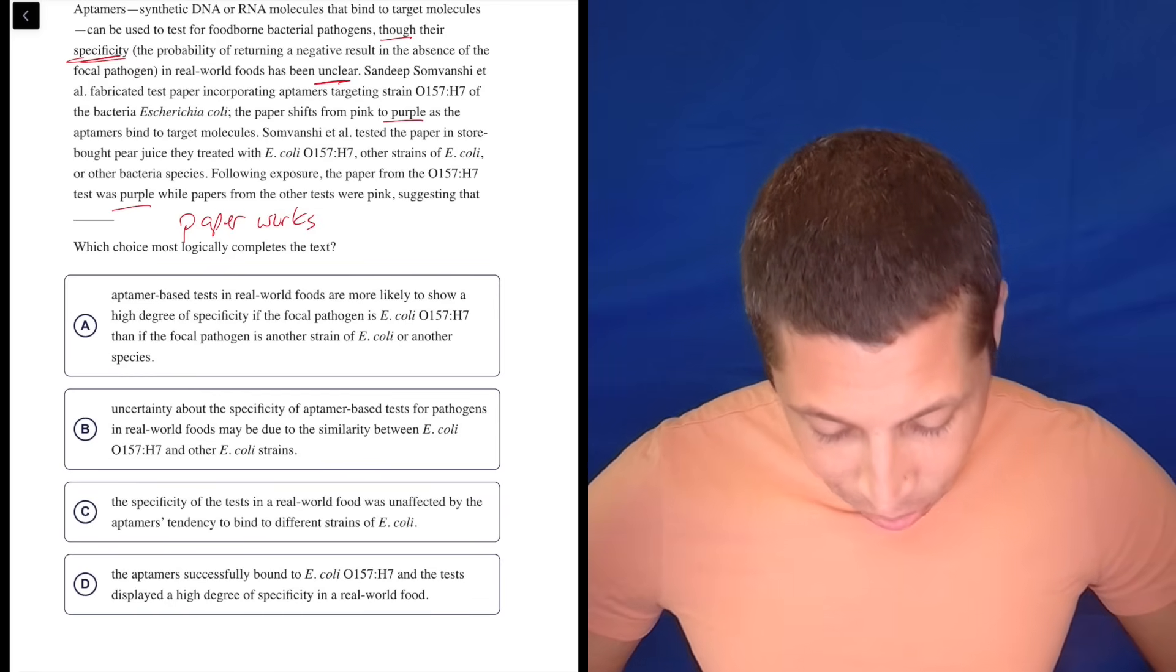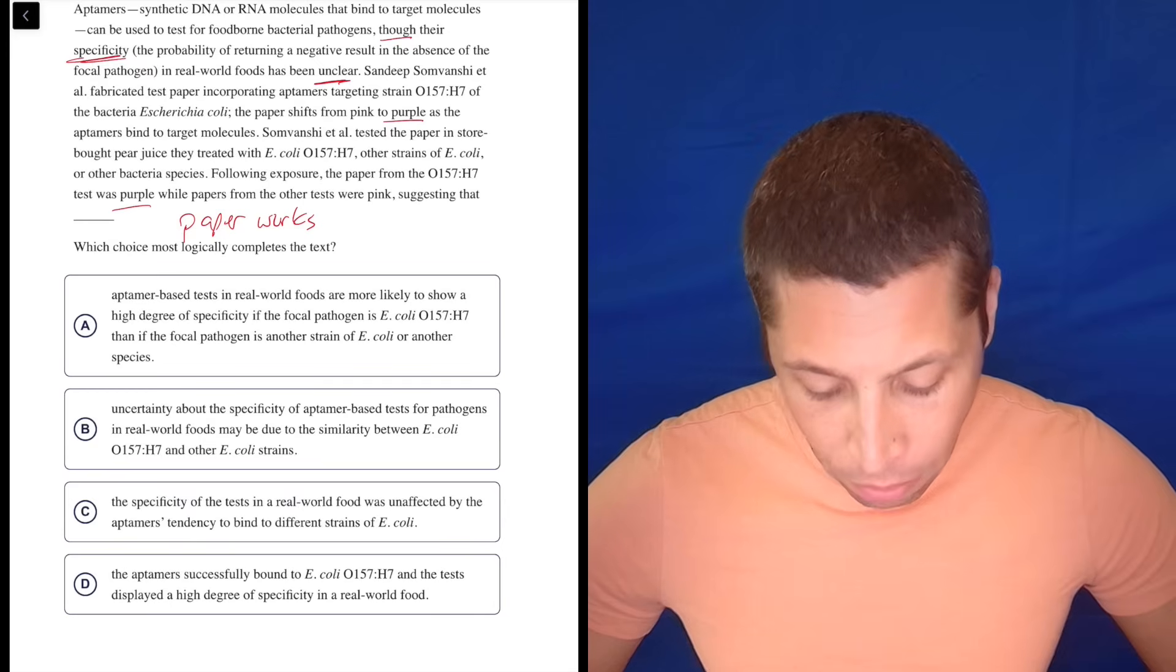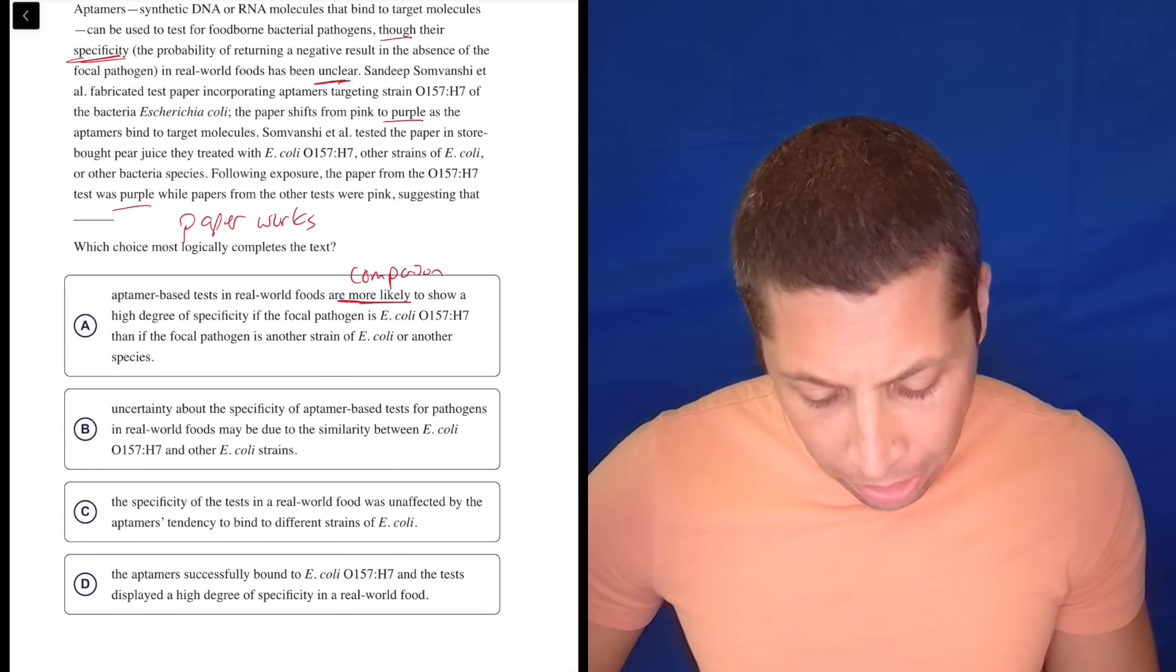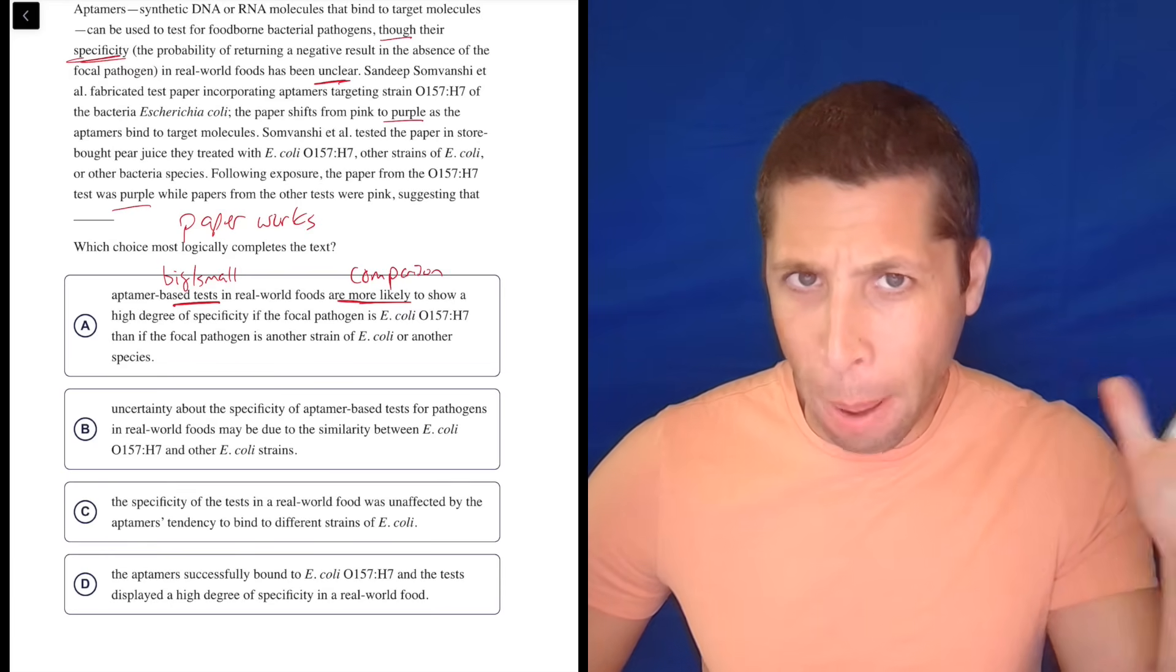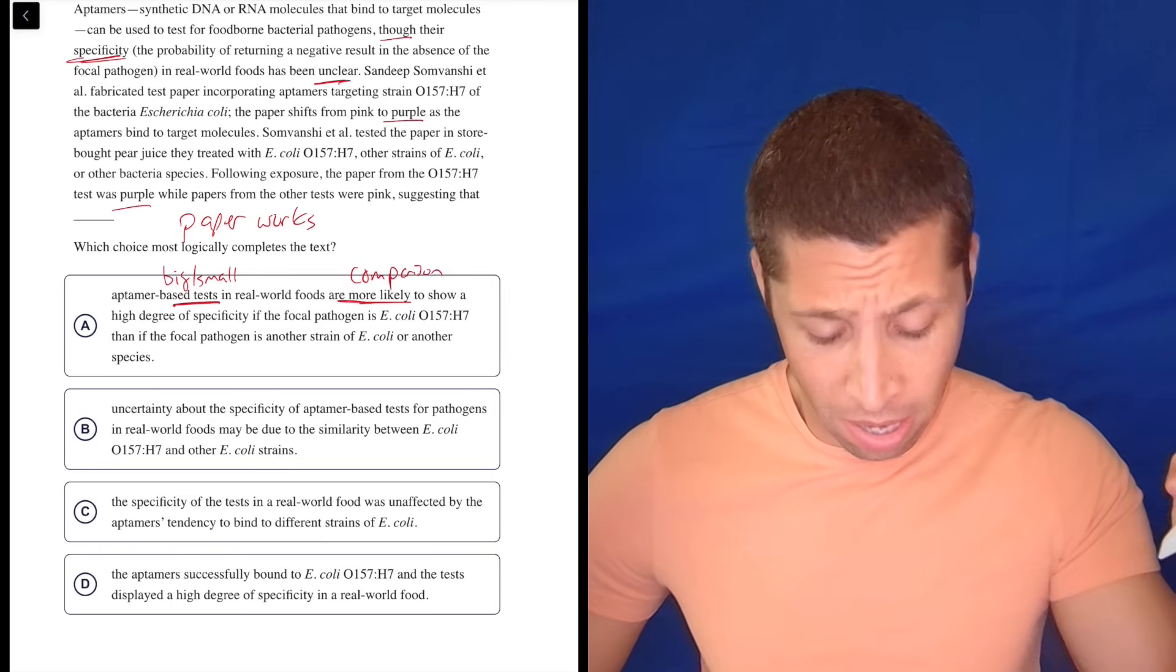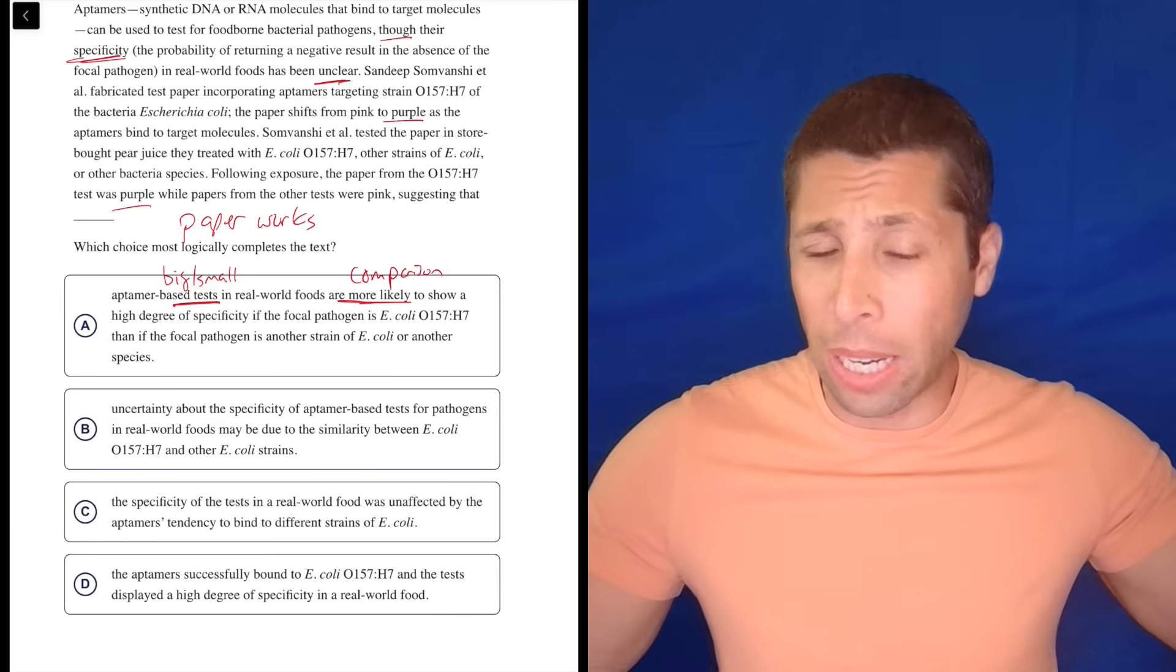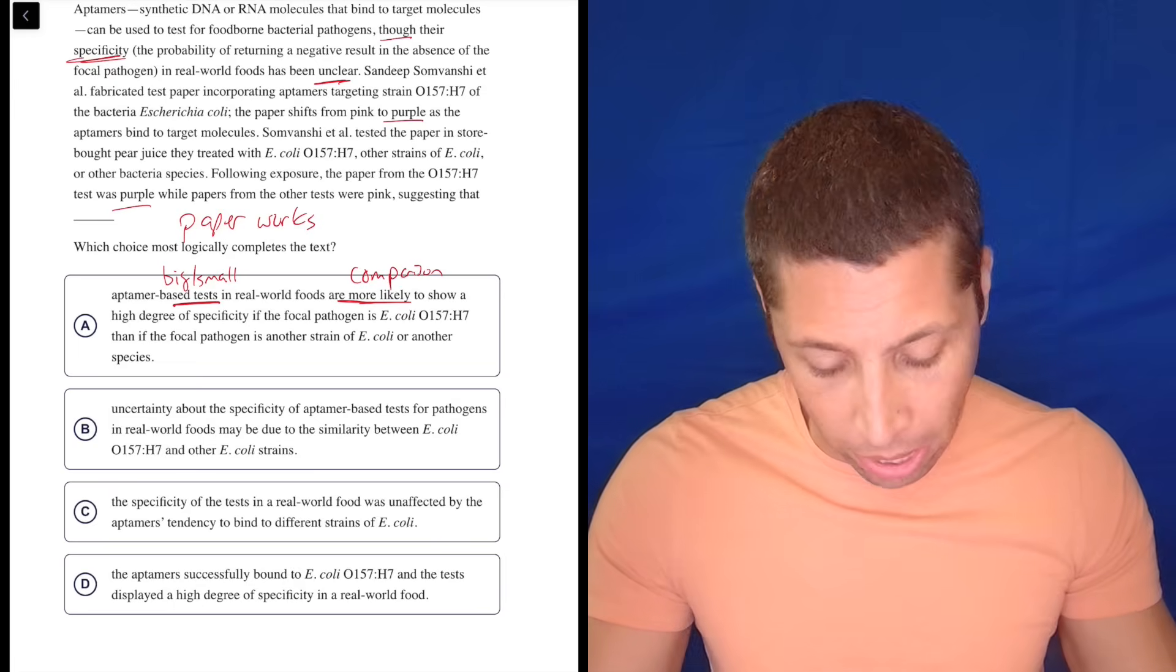Let's go to A. Aptamer-based tests in real-world foods are more likely to show a high degree of specificity if the focal pathogen is E. coli O157H7 than if the focal pathogen is another strain of E. coli or another species. No, no, no. So, more likely comparison, right? That's already a red flag. Plus, this feels like a big, small thing, where this is one test that they did on one aptamer about one strain of one disease.